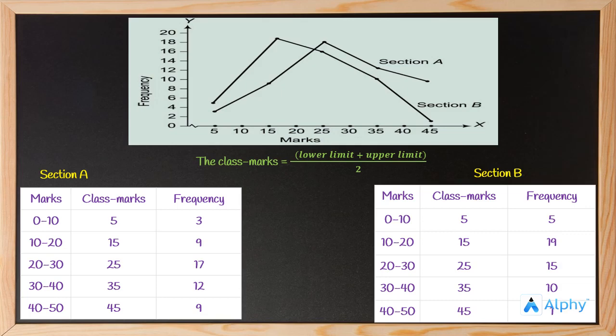In this graph, you can see there is a kink on the horizontal axis, which represents a break on the axis. We have used this kink because on the horizontal axis our data is not starting from 0 — it is starting with 5. That is why we have used a break on the axis, represented by the kink placed on the horizontal axis.